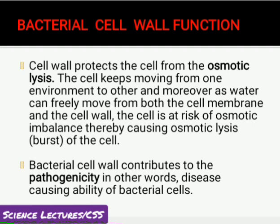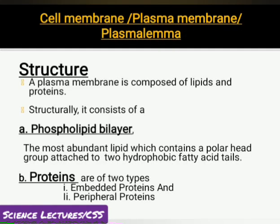The next organelle we will discuss is the cell membrane, also called the plasma membrane. The plasma membrane forms the surface or skin of the animal cell and limits the boundary of the cell. Cell membrane is elastic in nature, delicate, and has the ability of self-repairing. Chemically, the plasma membrane is made up of two chemicals: lipids and proteins. Structurally, it has two layers: a phospholipid bilayer and proteins.